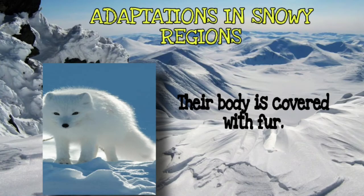In snowy regions, the white fur on animals helps them to hide from predators — this white color helps in camouflaging, which means to hide. The thick layer of fur also acts like a protecting coat against the cold climate. This is how the polar bear and other animals in the Arctic or Antarctic regions adjust to cold temperatures.